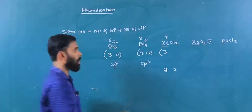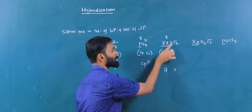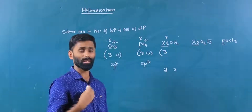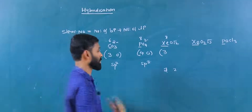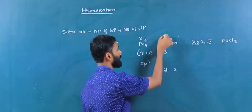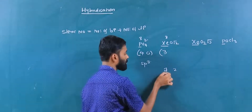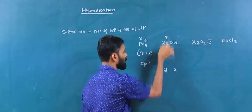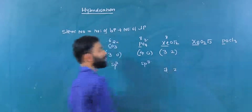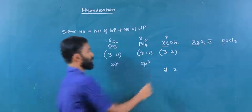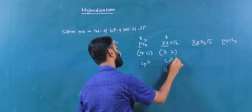For XeOF2 — xenon with 1 oxygen and 2 fluorines. Xenon valence electrons: 8. Oxygen forms 1 bond. Total diatomic atoms: 2, so 8 minus 2 equals 6, minus 4 equals 4, divided by 2 equals 2. With 3 bond pairs and 2 lone pairs, hybridization is SP3D.